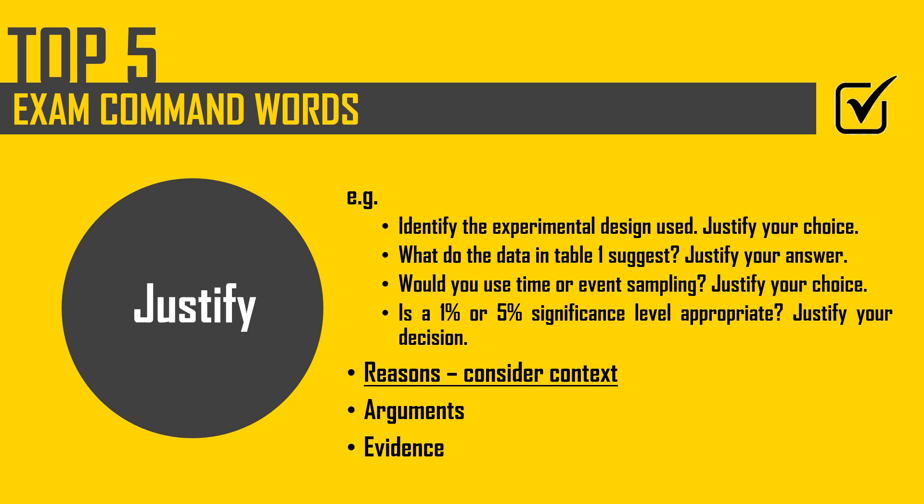When you're designing a study, particularly with observations, you might be justifying why you would do it covert, or why you'd use event sampling. You might also be justifying why you'd use a certain significance level — we typically use the 5% level, but for a socially sensitive area you might use the 1% level. It's about the 'why': give reasons, give an argument, and if appropriate, provide some evidence for that decision.